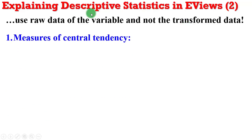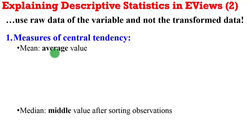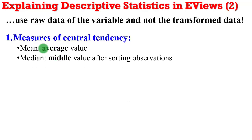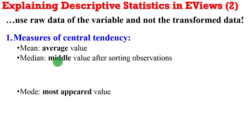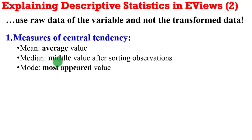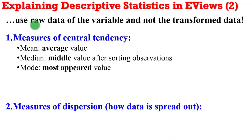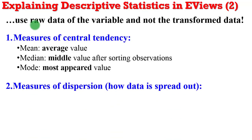On measures of central tendency, the mean is simply the average value of that particular variable. The median will be the middle value after you have sorted from the highest to the lowest or vice versa, while the mode will be the most frequently appearing value for that particular variable.